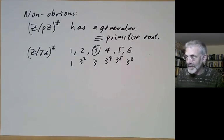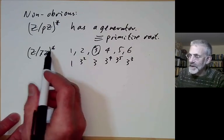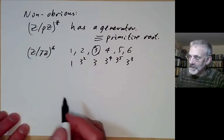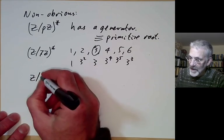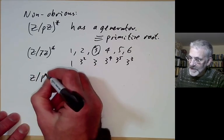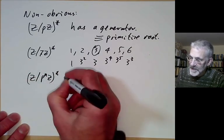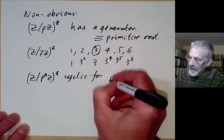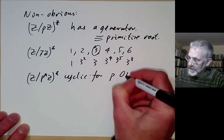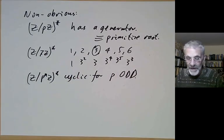For example, if we take Z modulo 7Z under multiplication, which has elements 1, 2, 3, 4, 5, and 6, and take the element 3 and look at its powers, we get 1, 3, 3 squared which is congruent to 2, 3 cubed which is congruent to 6, 3 to the 4, and 3 to the 5 — so every element is a power of 3, and therefore this is a cyclic group. We also saw that Z modulo p to the n Z star is cyclic for p odd.